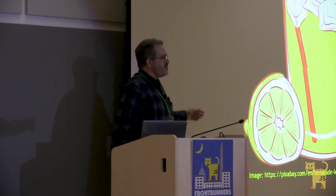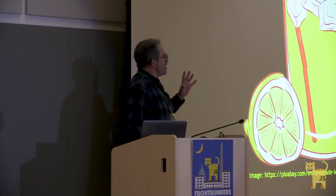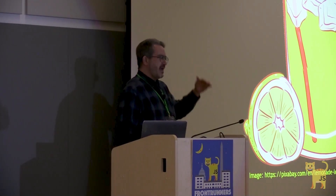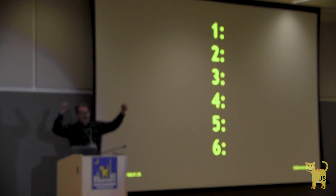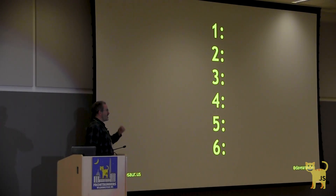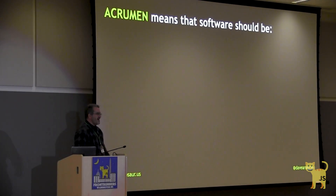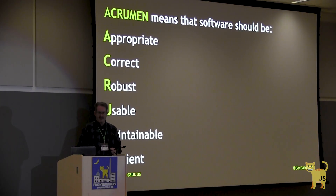But what is ACRUMEN in this context? The acronym ACRUMEN — try saying that ten times fast — just takes those aspects and puts them in priority order. The aspects are that software should be Appropriate, Correct, Robust, Usable, Maintainable, and Efficient.